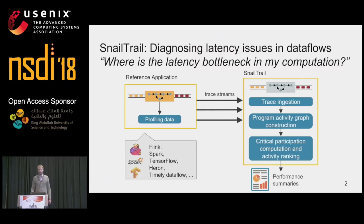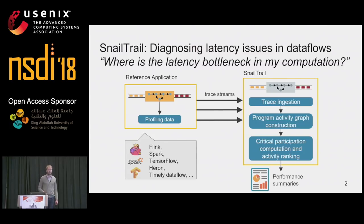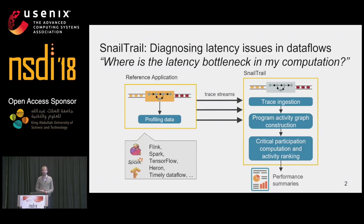In this talk, I'll walk you through what the program activity graphs are and what the critical participation is. We added or extended the instrumentation of some very well-known distributed streaming systems. If you're running Flink, Spark, TensorFlow, Heron, or Timely Dataflow, you can start using SnailTrail right now. I'll present how we built SnailTrail, what challenges we encountered, and how we solved them.